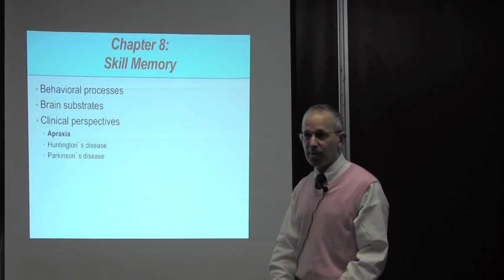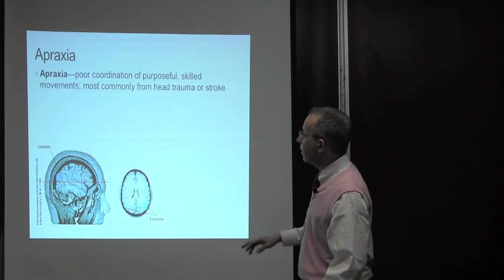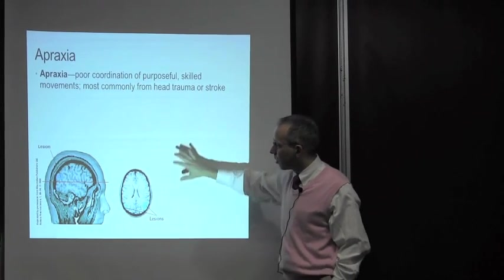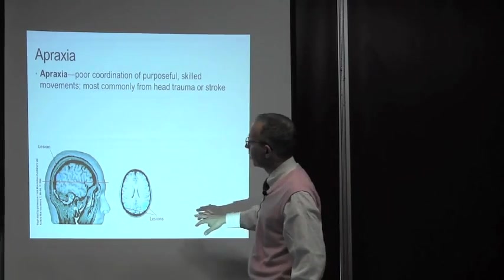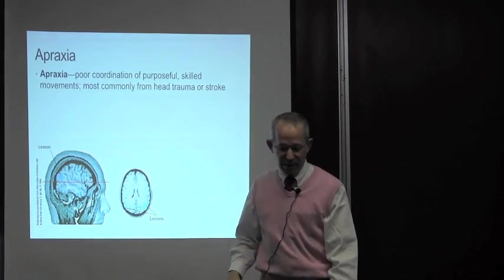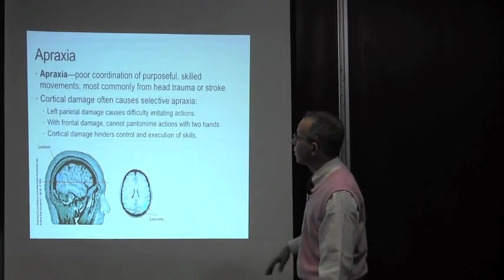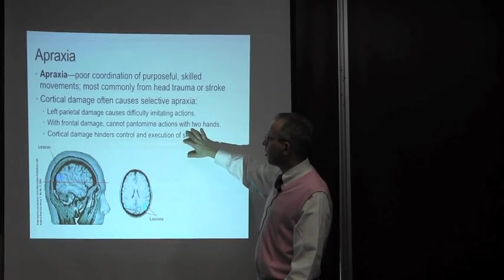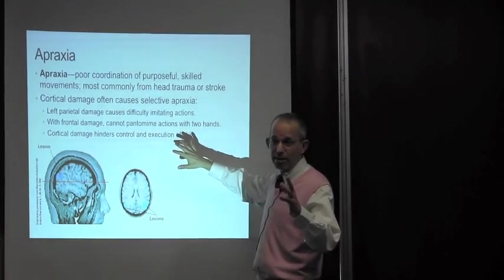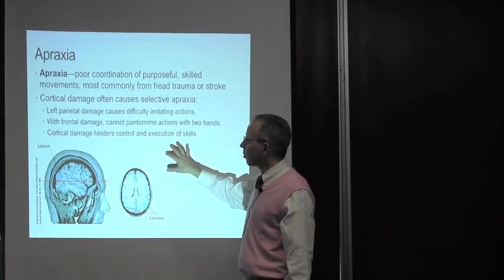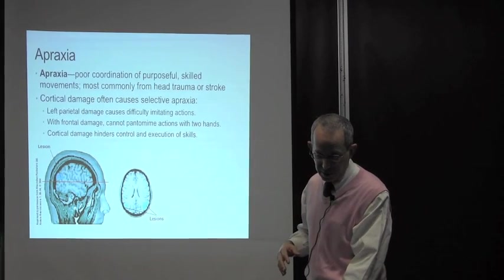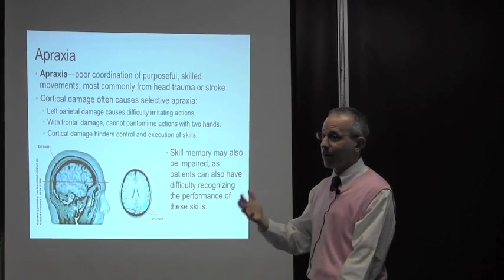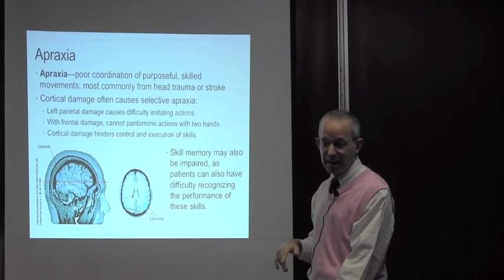We're going to wrap up and just talk about three clinical disorders. Apraxia is poor coordination of purposeful skilled movements. This most commonly comes from head trauma or stroke. It's involved in cortical damage. Sometimes you can have selective apraxias. Left damage can be involved in imitating actions. Frontal damage, you can't pantomime actions with two hands.